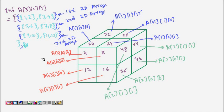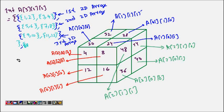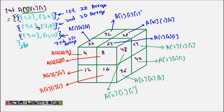In this lecture we are going to learn about three-dimensional arrays and pointers. Like previously, three-dimensional arrays also have a lot of relation with pointers. If we define a three-dimensional array, let's take one example: a[3][2][2]. Multi-dimensional arrays follow a recursive procedure, so a[3][2][2] is basically three two-dimensional arrays of size 2×2.